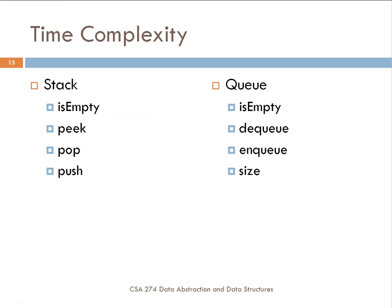Queue operations are essentially the same. Checking whether the queue is empty is O(1) — just check the front of the queue. Dequeuing is removal of an element from the front — O(1). Enqueuing adds something to the end of the queue — also O(1). Doing size for both stack and queue requires counting through the entire data structure to determine how many elements there are, so size for stack and size for queue should be O(n).